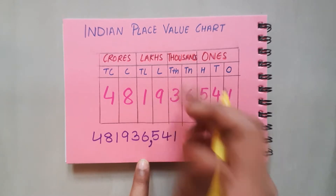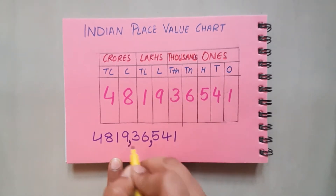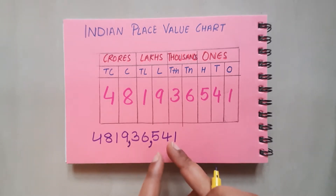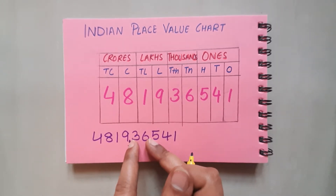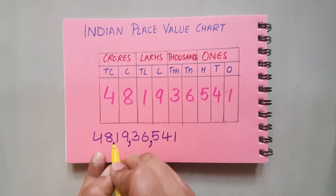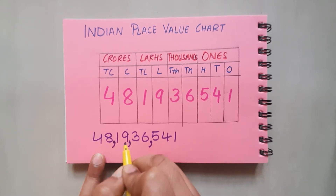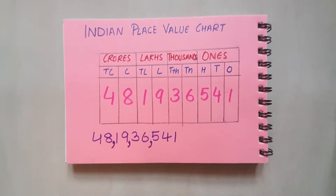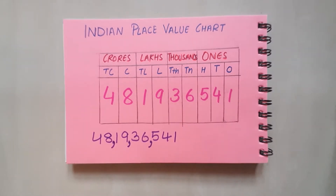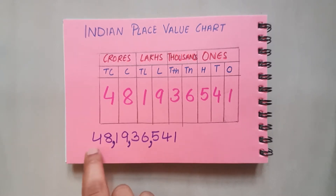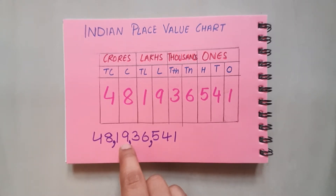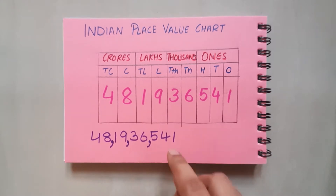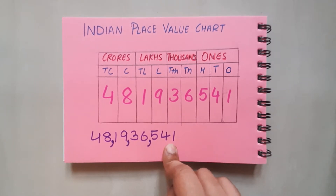Now I know this is the ones period. In the thousands period you have thousands and ten thousands, so after two places I'm going to mark the period. Then the lakhs period has two places, and again I'm going to put a comma. Now after looking at this number, it becomes easy to read it correctly — it is 48 crore 19 lakh 36,541.